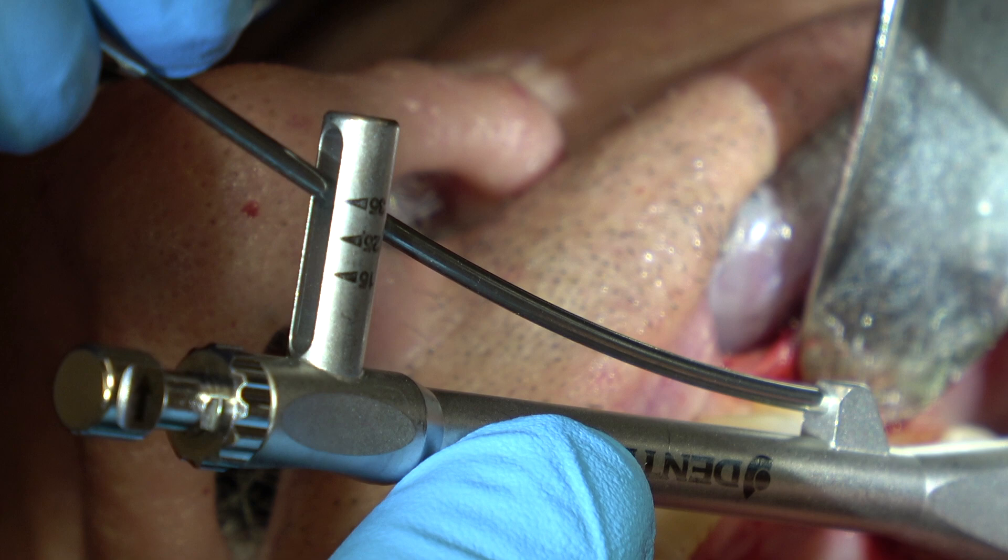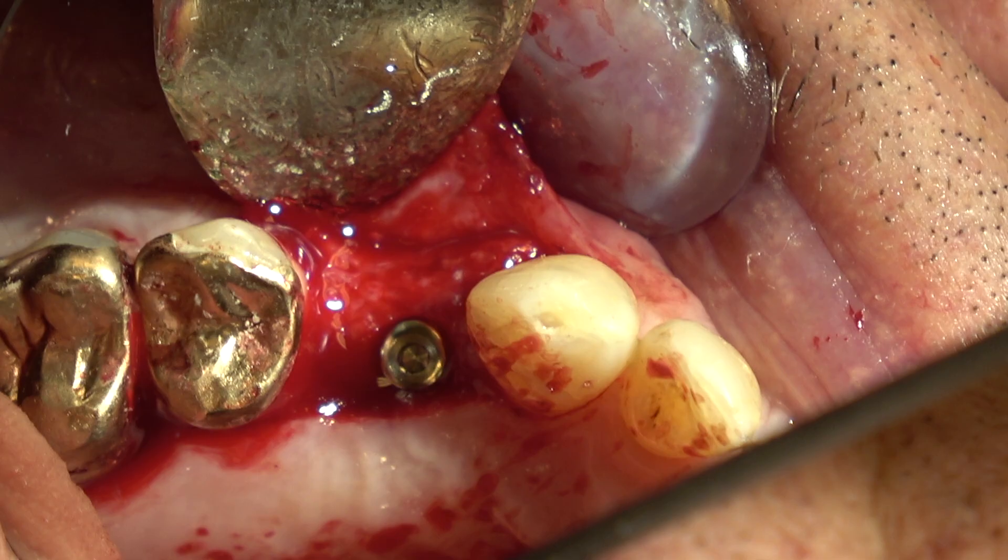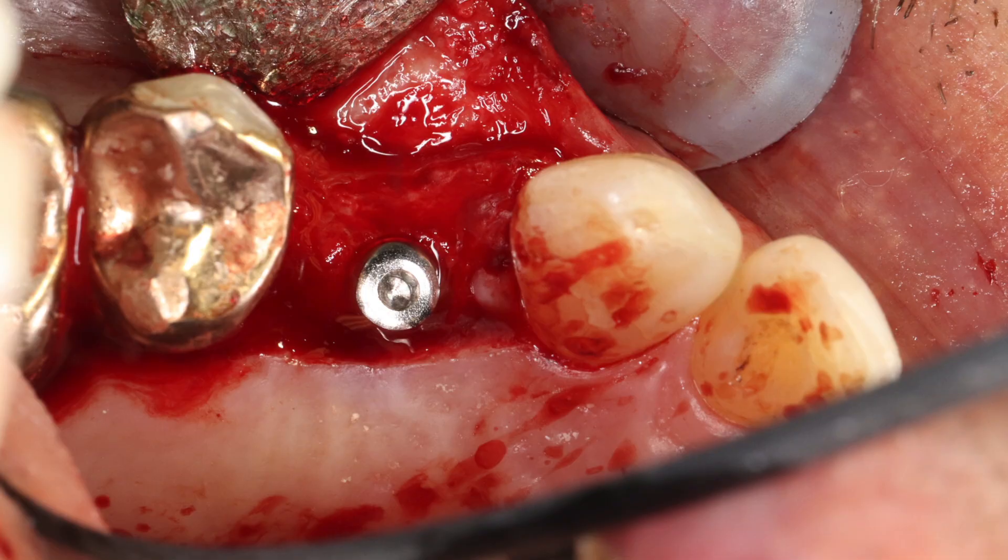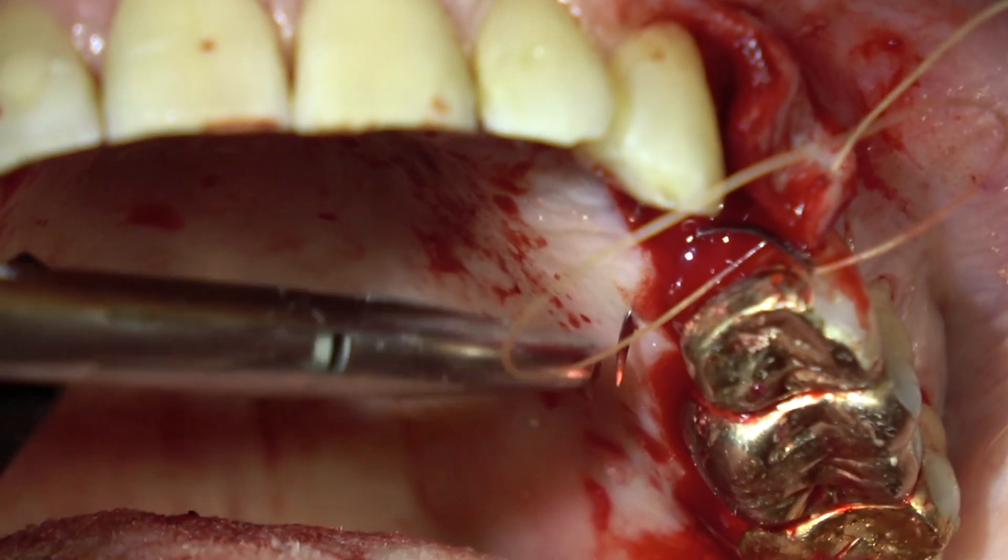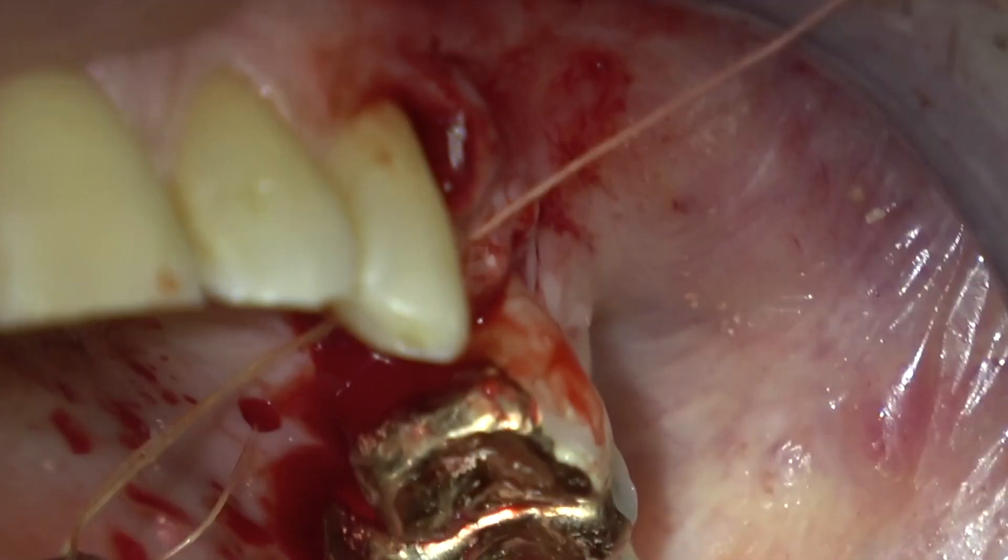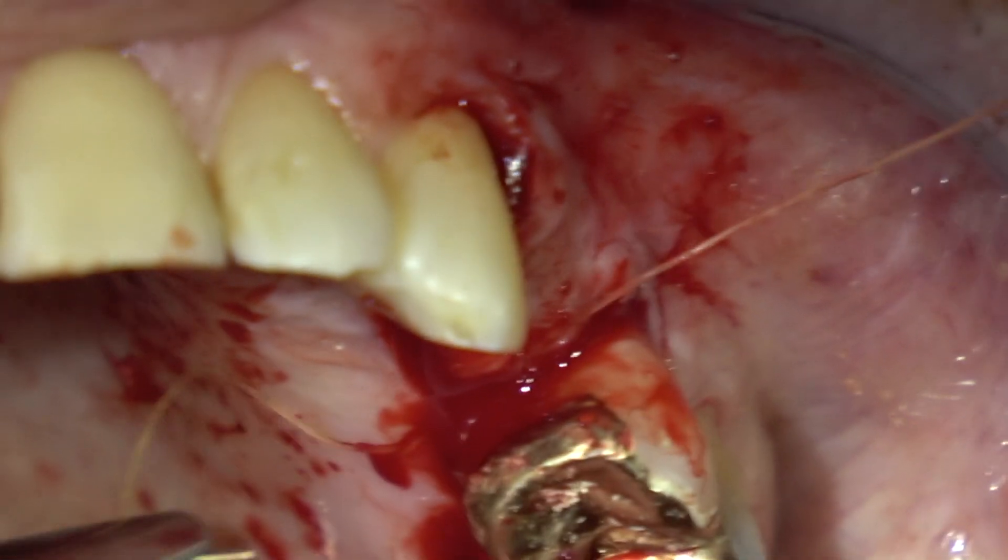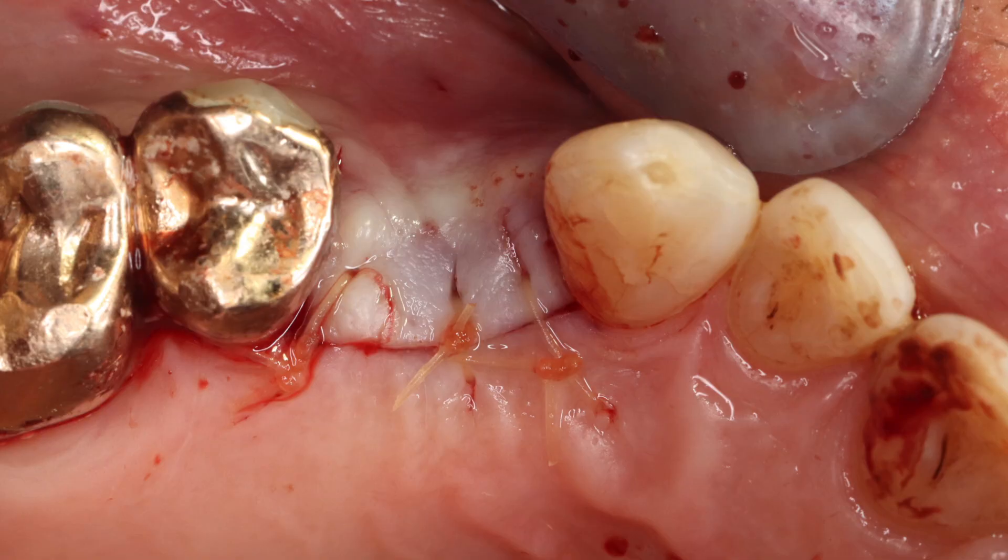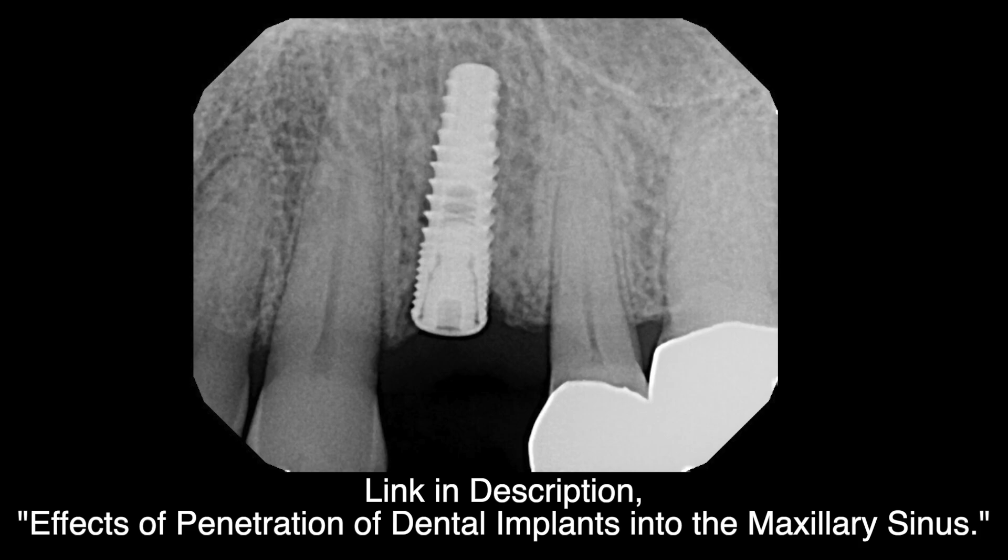Screw the implant in to 35 Newton-centimeters, then screw the flat healing cap on top and suture it. This is 3-0 gut. I've got one suture on the mesial, one on the distal, and one in between. We'll let that heal for three months.